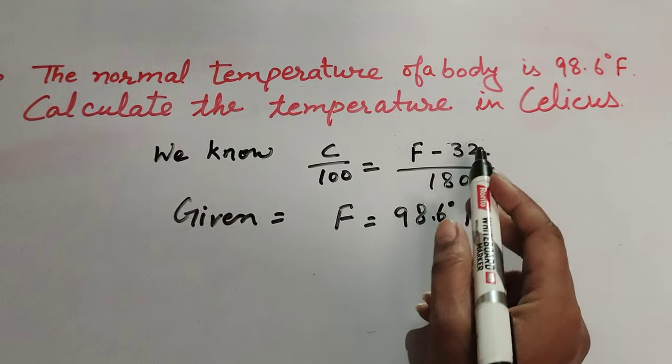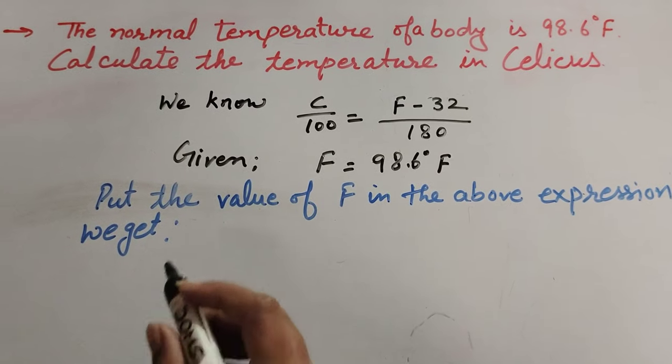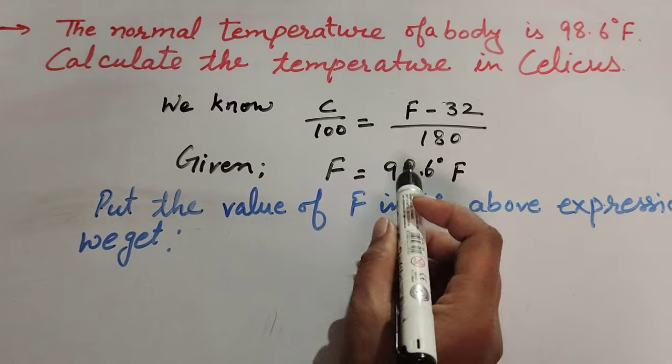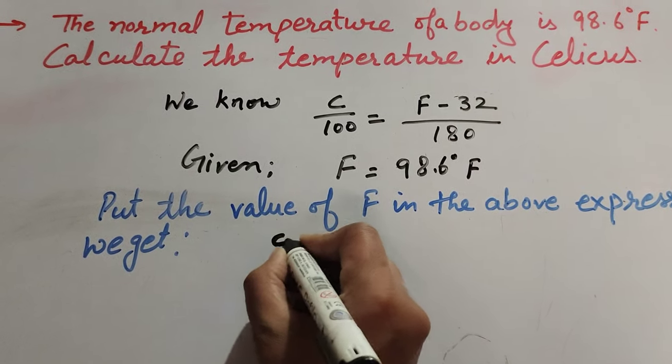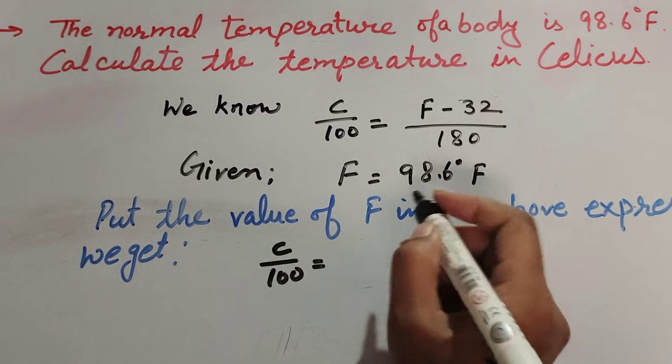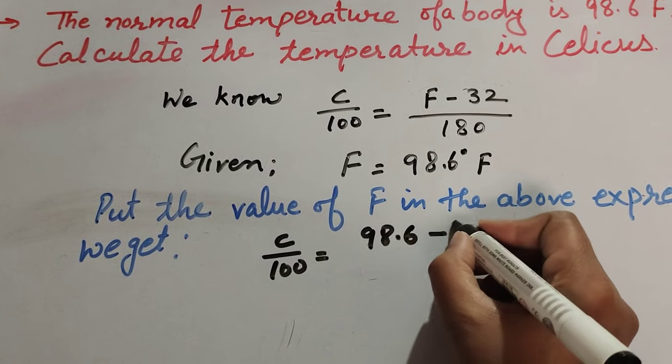Now we put this value of F in the given expression. C over 100 is equal to F minus 32. F is 98.6 minus 32.